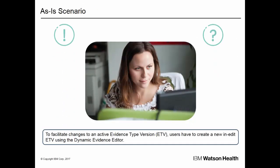To facilitate changes in an active evidence type version, or ETV, administrators must create a new in-edit ETV using the Dynamic Evidence Editor, then make draft changes, and then activate the new version to make changes to the model or UI design for an evidence type. This is the correct process for making changes that can impact eligibility and entitlement, and it also enables customers to update evidence designs based on legislation changes.